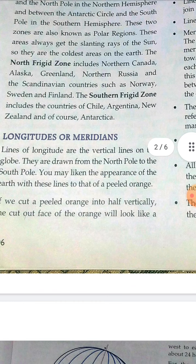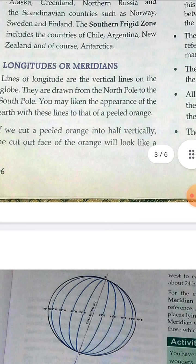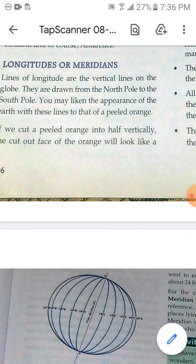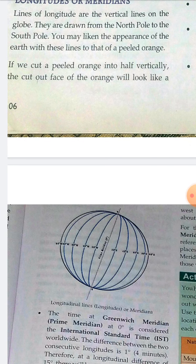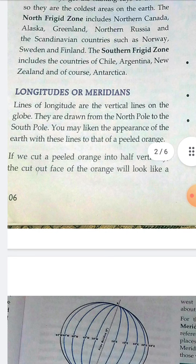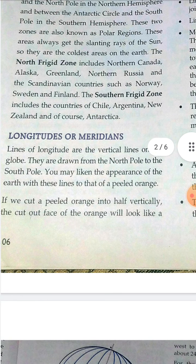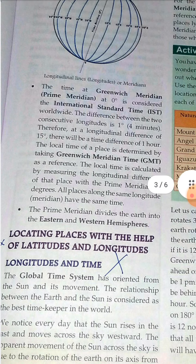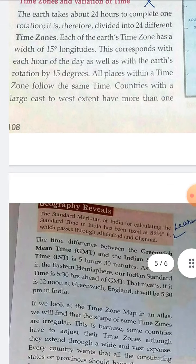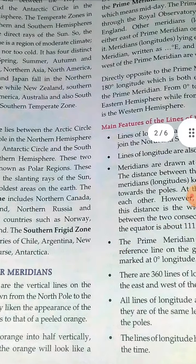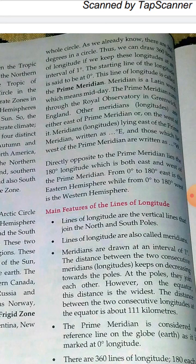Now coming to longitudes, also known as meridians. These are vertical parallel lines drawn on the globe from the North Pole to the South Pole. The appearance of the earth with these lines is like that of a peeled orange cut vertically in half. Since there are 360 degrees in a circle, we can draw 360 lines of longitude.